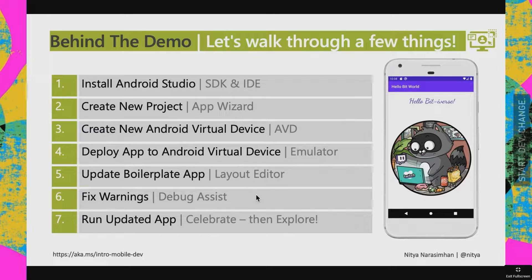The steps for this demo: first, install Android Studio — I already have that on my machine; second, use the Create New Project Wizard to build a basic Android app; third, create a new Android Virtual Device so you can test your app on an emulator without needing a real device; fourth, update the boilerplate code to show the Bit icon; and finally, fix any warnings, run the updated app, and don't forget to celebrate.